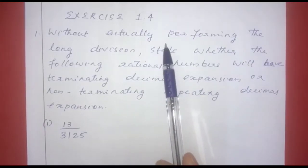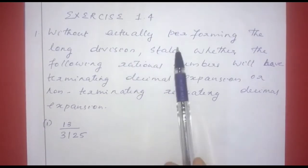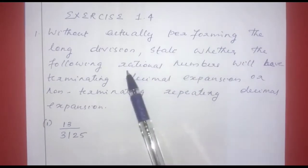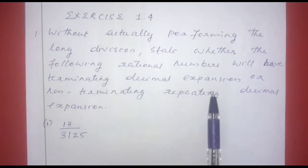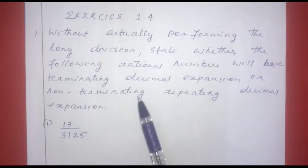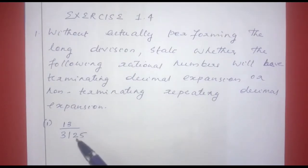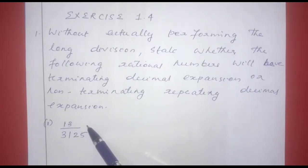The last exercise here, Exercise 1.4, the first question: without actually performing the long division, state whether the following rational numbers will have terminating decimal expansion or non-terminating repeating decimal expansion. That is what we have to determine — whether the decimal expansion is terminating or non-terminating repeating.